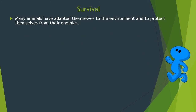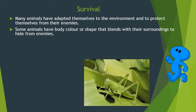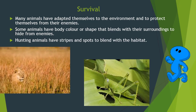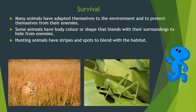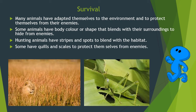Many animals have adapted themselves to the environment and to protect themselves from their enemies. Some animals have body color or shape that blends with their surroundings to hide from enemies. Hunting animals have stripes or spots to blend with the habitat. Some have shells and scales to protect themselves from enemies. For example: lion, grasshopper.